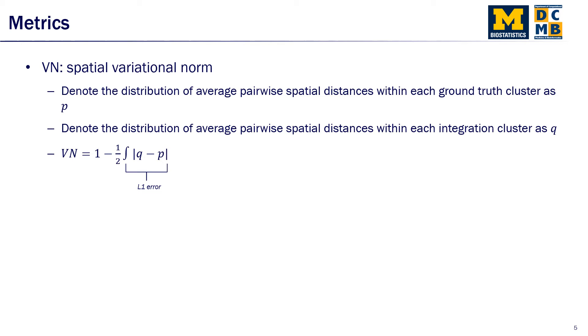We denote the distribution of average pairwise spatial distances within each ground truth cluster as P, and denote the distribution of average pairwise spatial distances within each integration cluster as Q. And the spatial variation norm is 1 minus 0.5 multiplied by the L1 error between the two distributions.